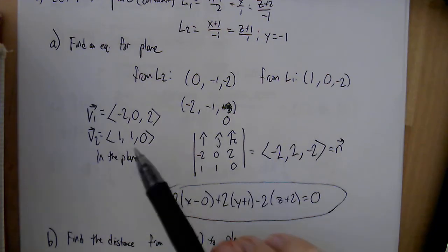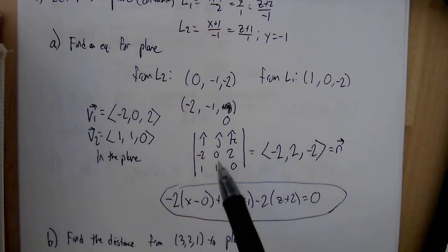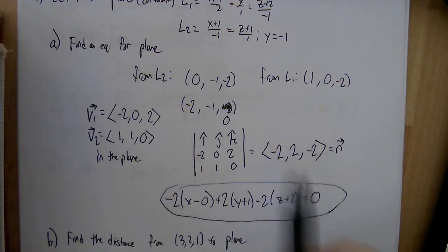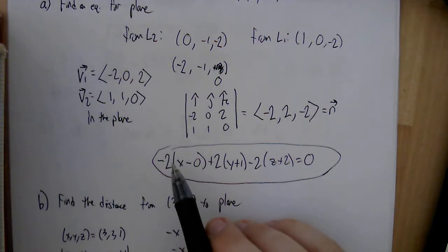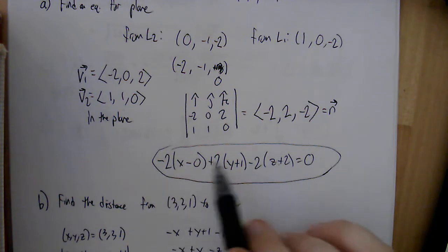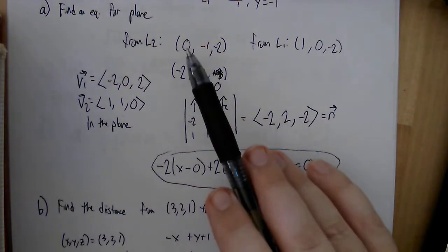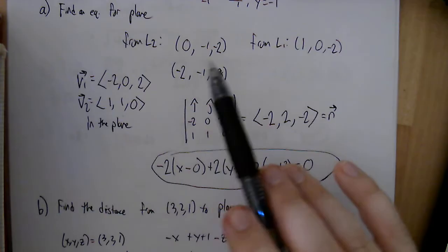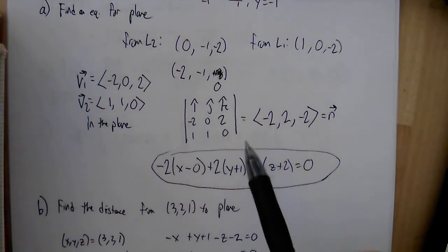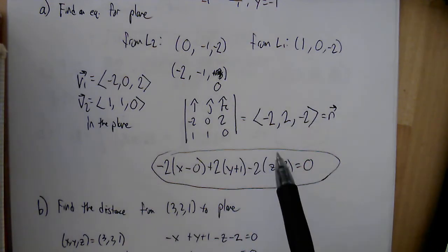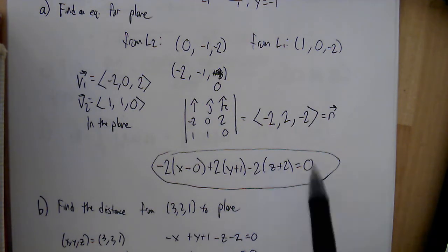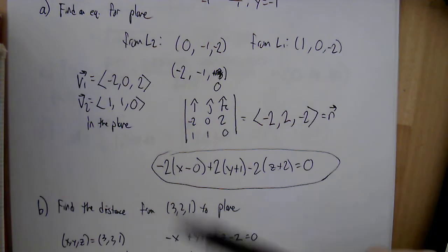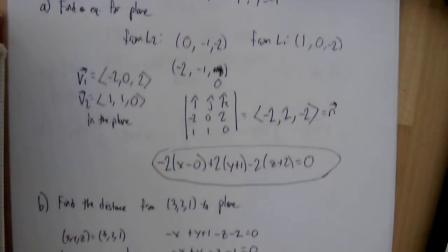With the normal vector, we write the plane equation using the normal components as coefficients for x, y, z, dotted with the vector from a point on the plane. Using the point (0, negative 1, negative 2), this gives the plane equation. There was no requirement for a specific form, so this is fine.